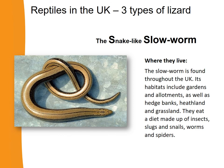And finally, our last lizard is the slow worm. Where do they live? The slow worm is found throughout the UK, and its habitats include gardens, allotments, as well as hedge banks, heathlands and grasslands. What do those habitats give the slow worms? In terms of food, they eat a diet made up of lots of insects, slugs and snails, worms and spiders.